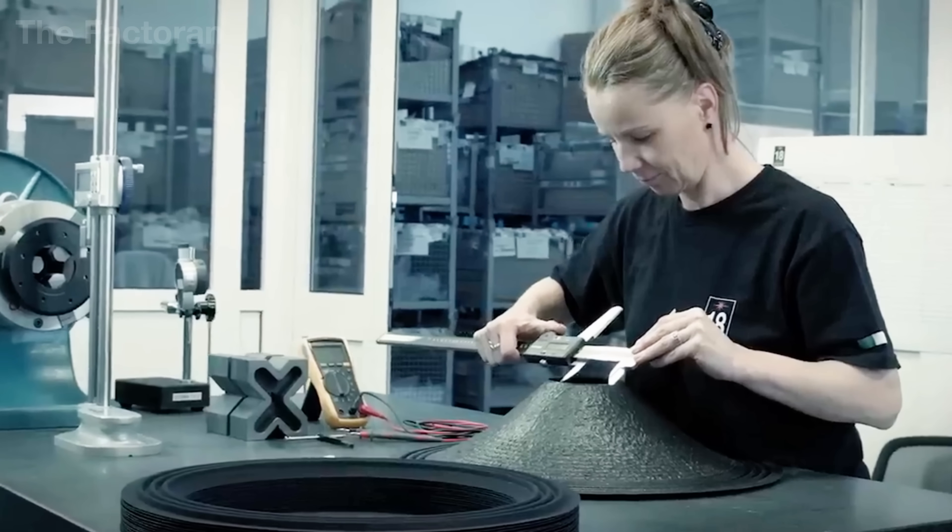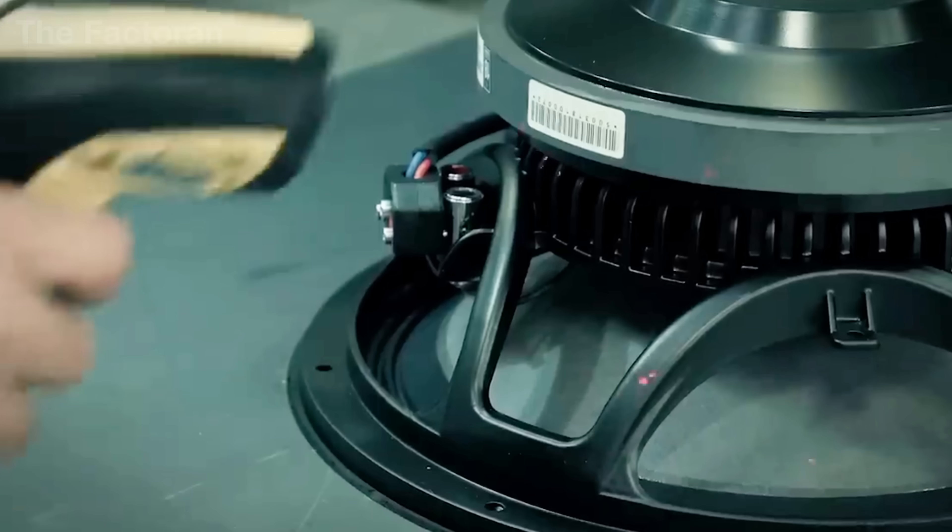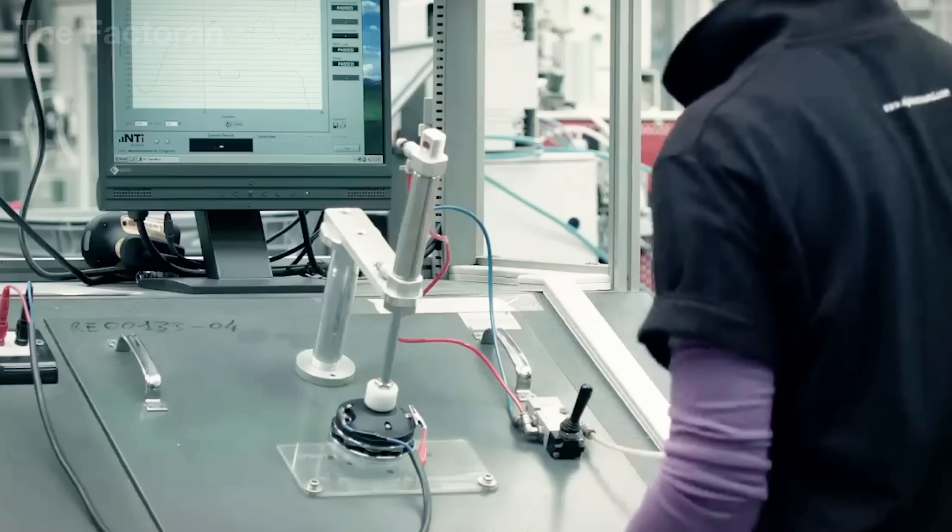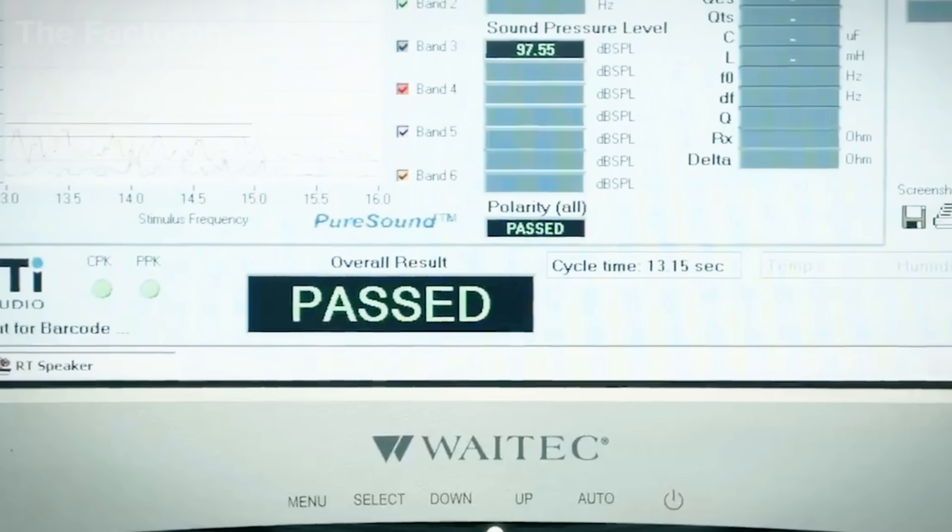Next, technicians perform a manual inspection using directed light to examine every bonding point. The goal is to ensure that the diaphragm and coil are fixed exactly as designed, perfectly centered, free of misalignment, and with no contact against the magnet.